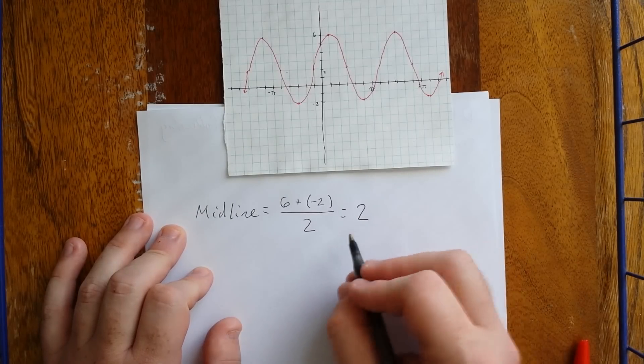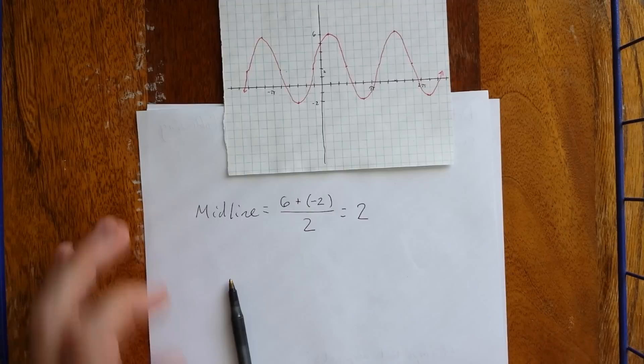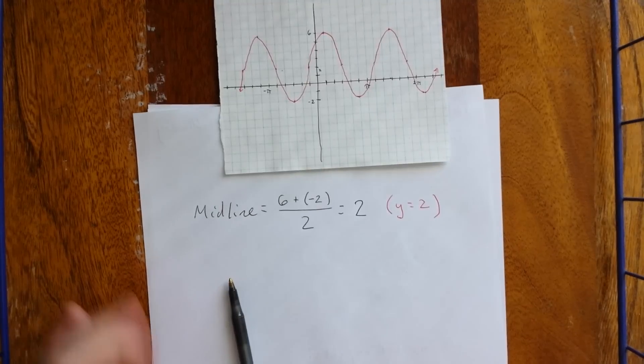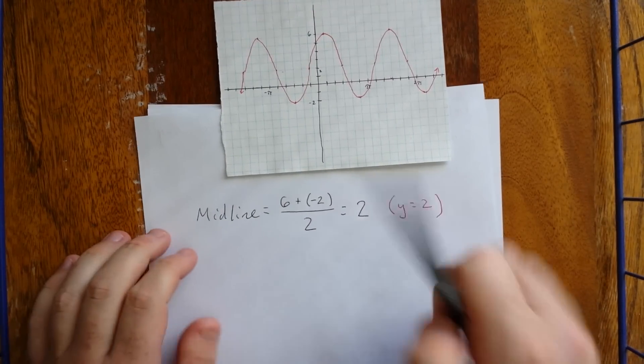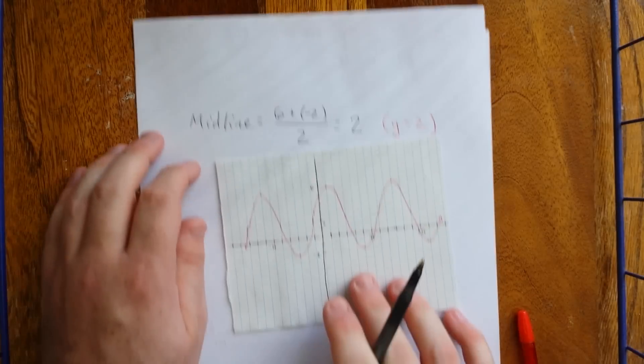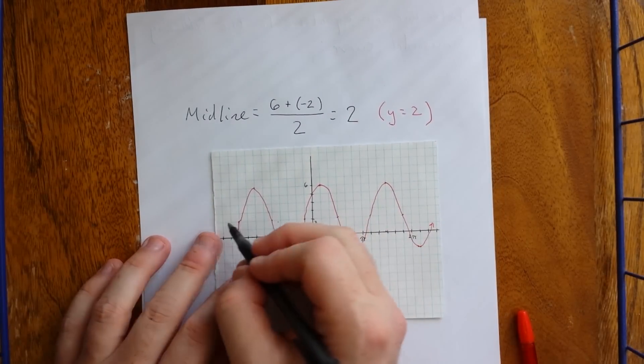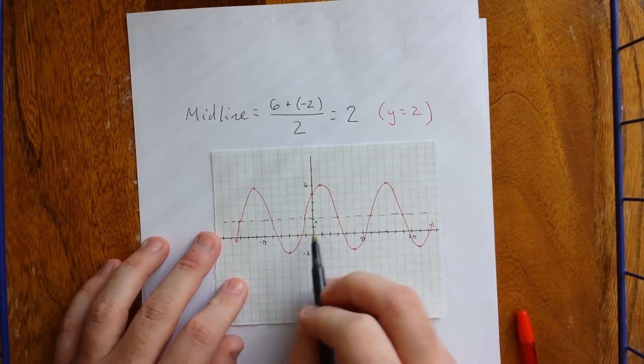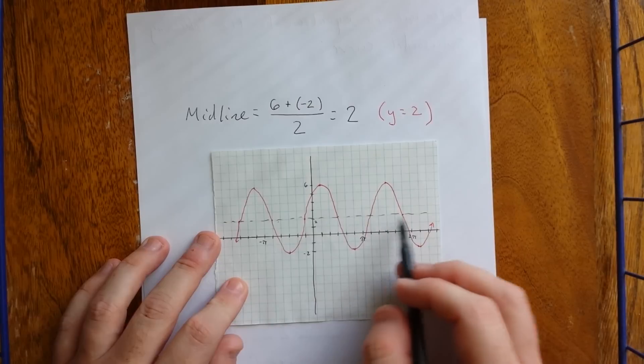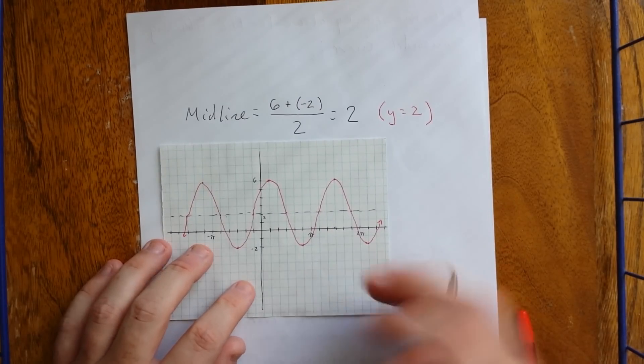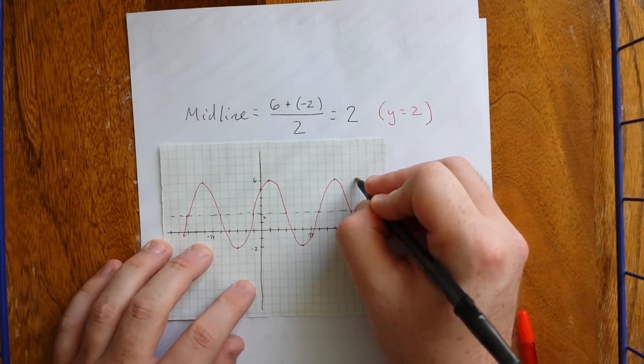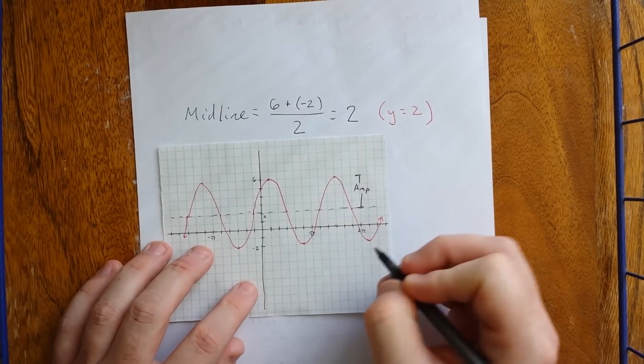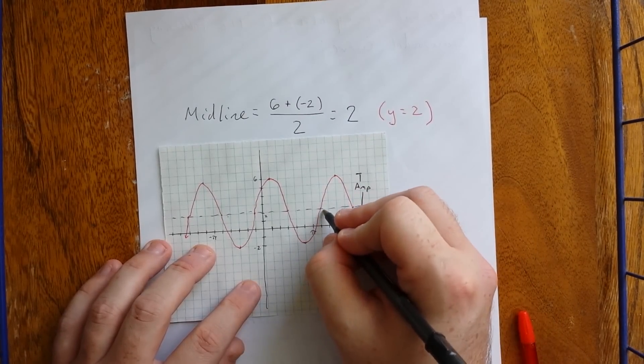Now, I've had students tell me the midline is 2. And I say, well, that's mostly right. The midline is an actual line, so it's got to be the equation of a line. And the equation of the line is y equals 2. Now, the way that that would look on the graph is that this midline would be exactly halfway in between a maximum and a minimum.